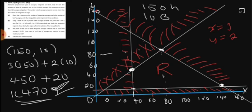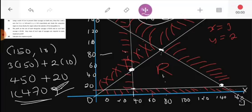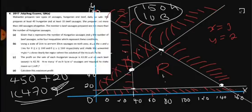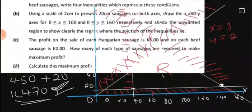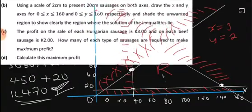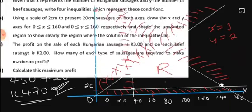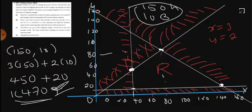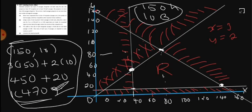For the last question, we are asked to calculate the maximum profit. We've already calculated it: the maximum profit is 470 kwacha, achieved with 150 Hungarian sausages and 10 beef sausages. Thank you so much — we can do other examples.